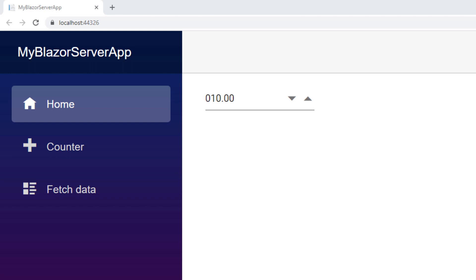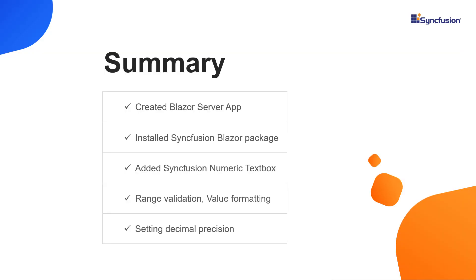For more information about the Syncfusion Blazor Numeric TextBox component, refer to the online documentation — a link is provided in the video description. To summarize: I explained the steps to create a Blazor application and add the Syncfusion Blazor package, added the Numeric TextBox component, and demonstrated range validation, value formatting, and setting decimal precision. You can download the working example from the GitHub link in the description. A free license key is also available if you are eligible for the community license. If you found this video useful, click Like and subscribe for more. Thanks for watching.